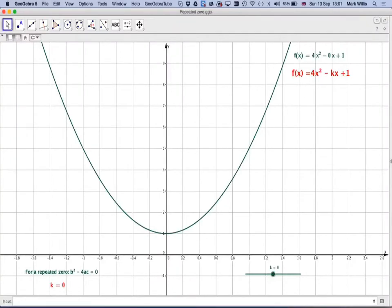To look at it from a geometrical perspective, here we have the graph of f of x is 4x squared minus 0x plus 1, because k is 0 in this case, but we've got 4x squared minus kx plus 1. And we've got a slider here that we can change the value of k, and at this particular moment k is 0.